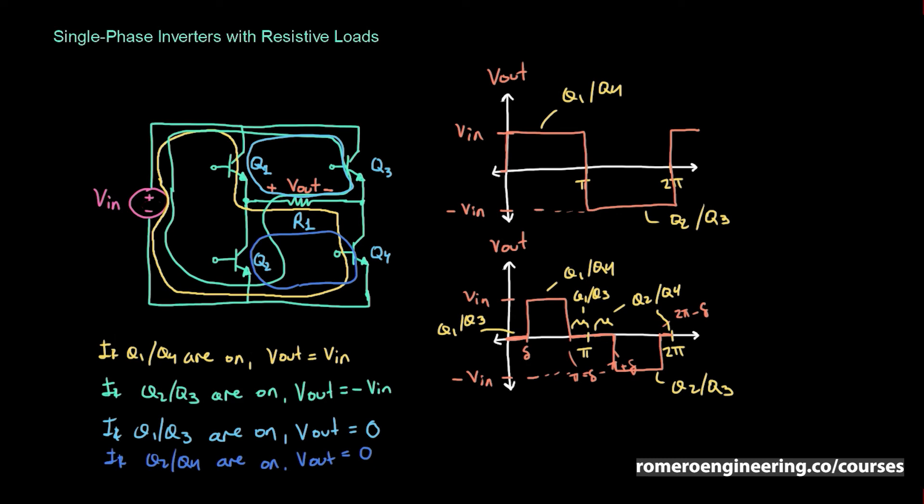As for the output current, since we have a resistive load, it has the same shape as the output voltage but scaled by the output resistance — so Iout equals Vout over R. This is the simplest type of inverter: single-phase with a resistive load. We've seen how these four transistors achieve an alternating voltage at the output using a DC input.